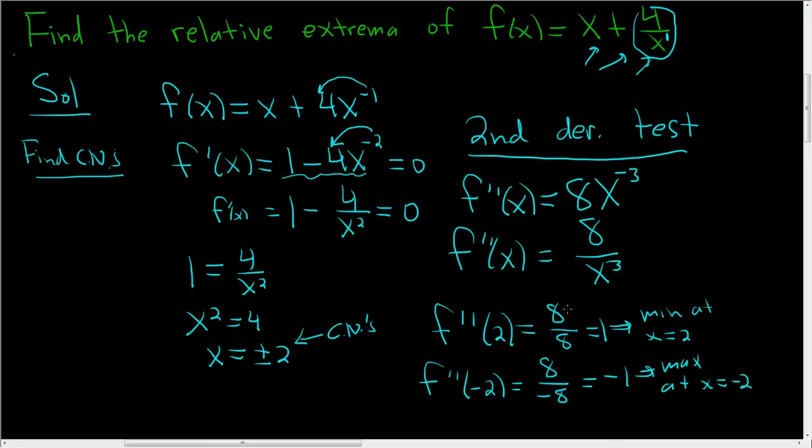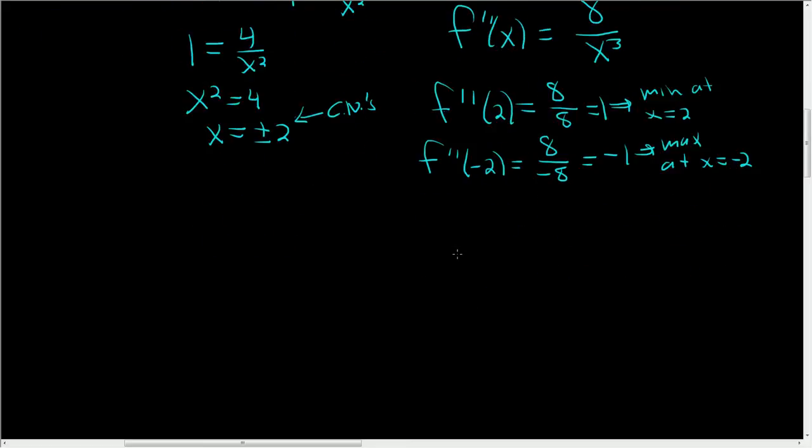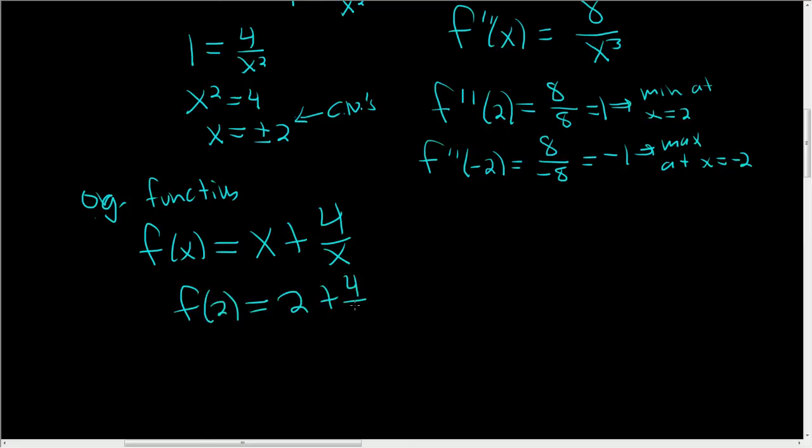We're not done. We still actually have to find the maximums and minimums. So let's write down the original function again. Our original function, the OG function, was f of x equals x plus 4 over x. All right, we know we have a min at x equals 2. So to actually find the minimum value, you evaluate f at 2. So you get 2 plus 4 over 2, 2 plus 2 is 4. So this is the minimum, 4.